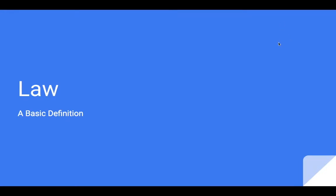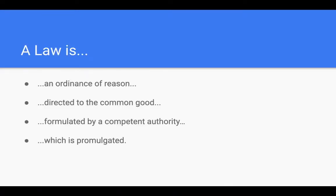This presentation is on law and we're just looking at a basic definition. We'll go through the basic components of this definition so that we can then apply this to the various types of law that we'll look at in the next video. A law is defined by Thomas Aquinas as an ordinance of reason directed to the common good, formulated by a competent authority, which is promulgated. As you can see, I've taken the entire sentence — the definition — and broken it out into the four main components, which we will look at in the forthcoming slides.